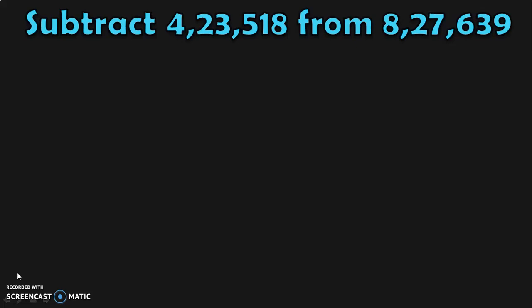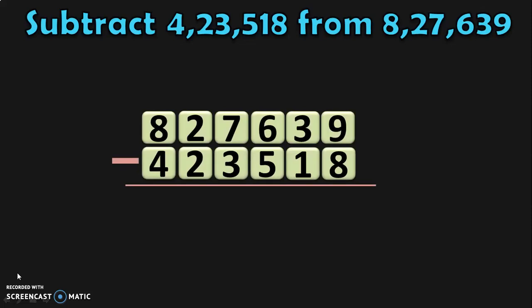First, let us subtract 4,23,518 from 8,27,639. Write down the bigger number on the top and then the smaller number below it. It is always a good practice to write down the place values: ones, tens, hundreds, thousands, ten thousands, and lakh. Now, begin the subtraction from the ones place.